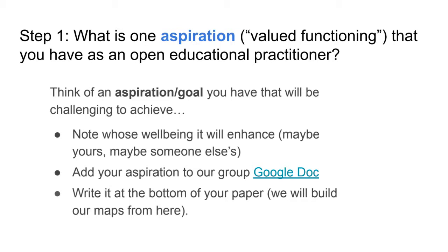Once you've identified a useful aspiration, write it at the bottom of your paper — and we'll build our maps upward from there. As with every step of the process, Gabby is going to show an example so you can get an idea of the kind of thing we're talking about.